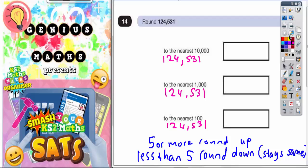Now the next thing you've got to do is identify which digit you're actually looking at each time. So when you're rounding to the nearest 10,000, you need the 10,000th digit. So we've got units, tens, hundreds, thousands, 10,000.